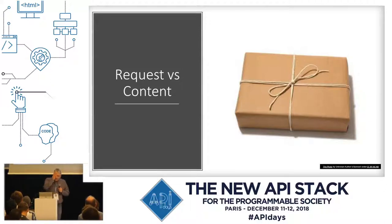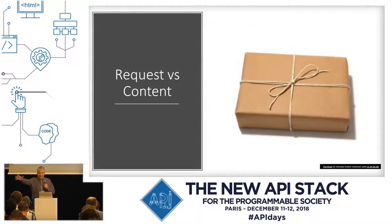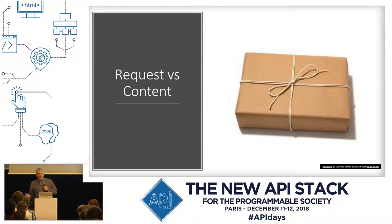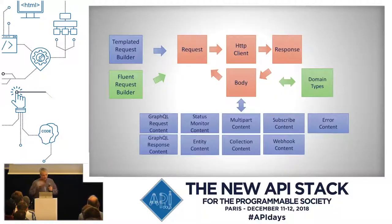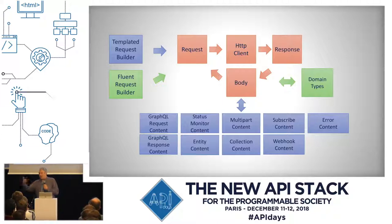Requests versus content. We have this really bad habit when we build SDKs of just pretending we're doing RPC — in an RPC signature, you have a method name and exactly the parameters you're going to send and exactly the things that are coming back. HTTP is a lot more flexible than that. One way you can take advantage of it is separating the request from the content. Imagine a package: the request is the wrapper, and we don't know what can go inside it — you can wrap all kinds of different things.